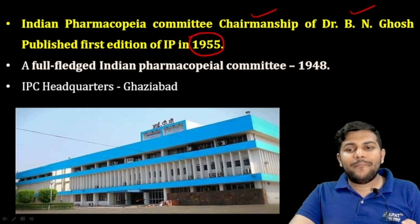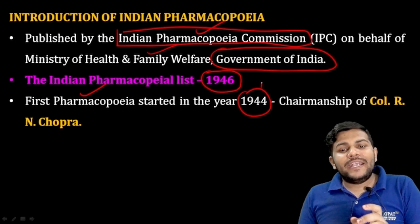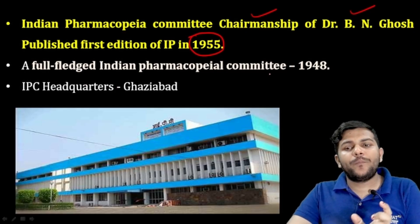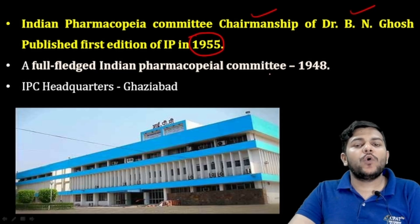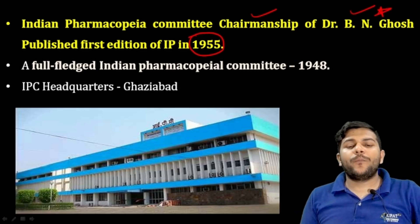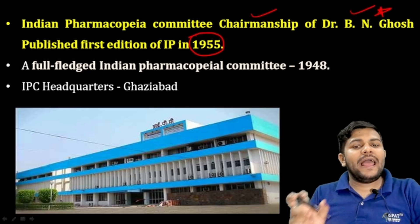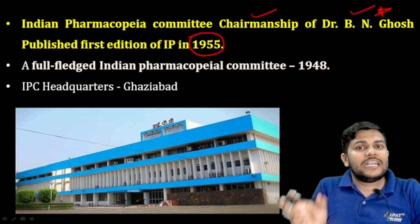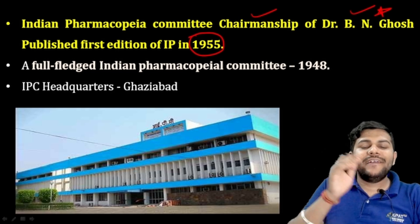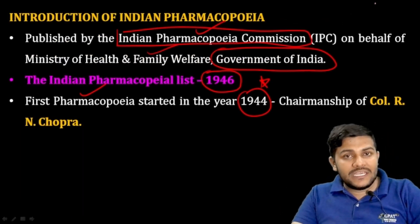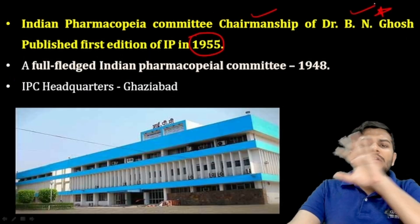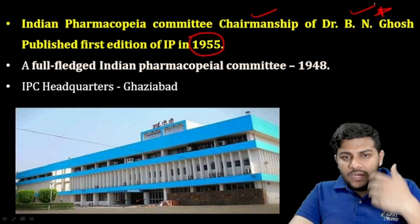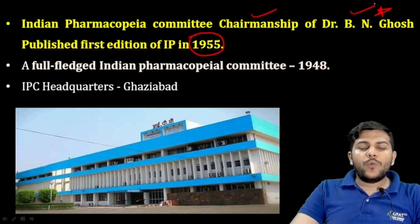An important point to remember: the process started in 1944 under the chairmanship of Col. R.N. Chopra, but the Indian Pharmacopoeia Committee published the first Indian Pharmacopoeia under the chairmanship of Dr. B.N. Chopra. A full-fledged Indian Pharmacopoeial Committee was formed in 1948, though the first edition came in 1955.